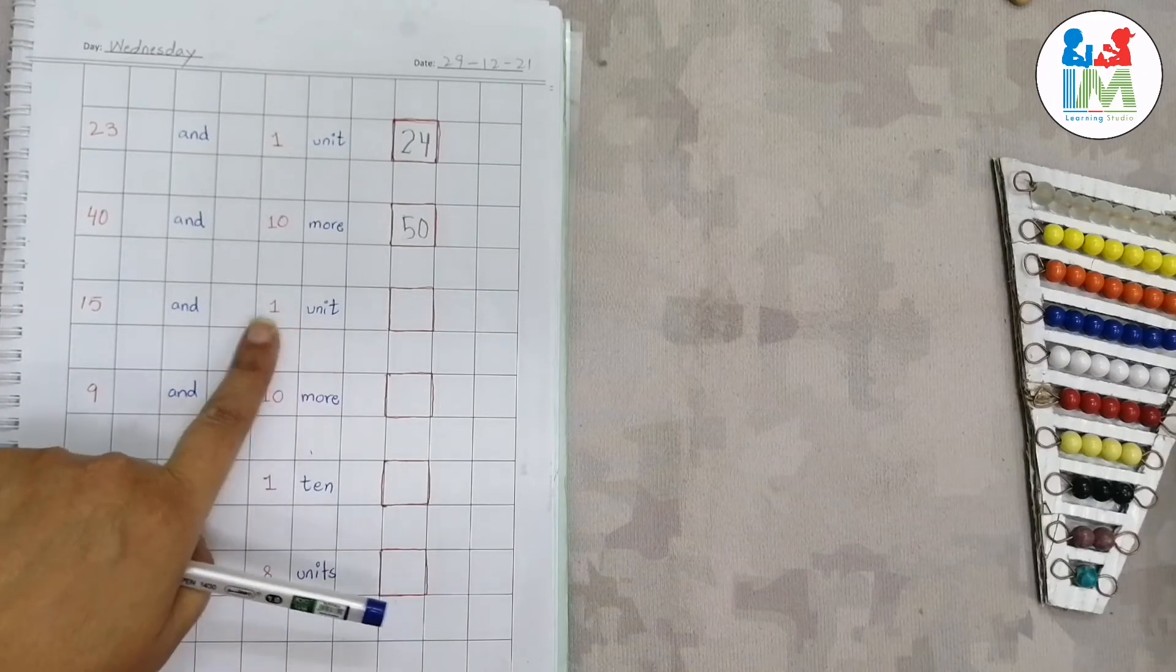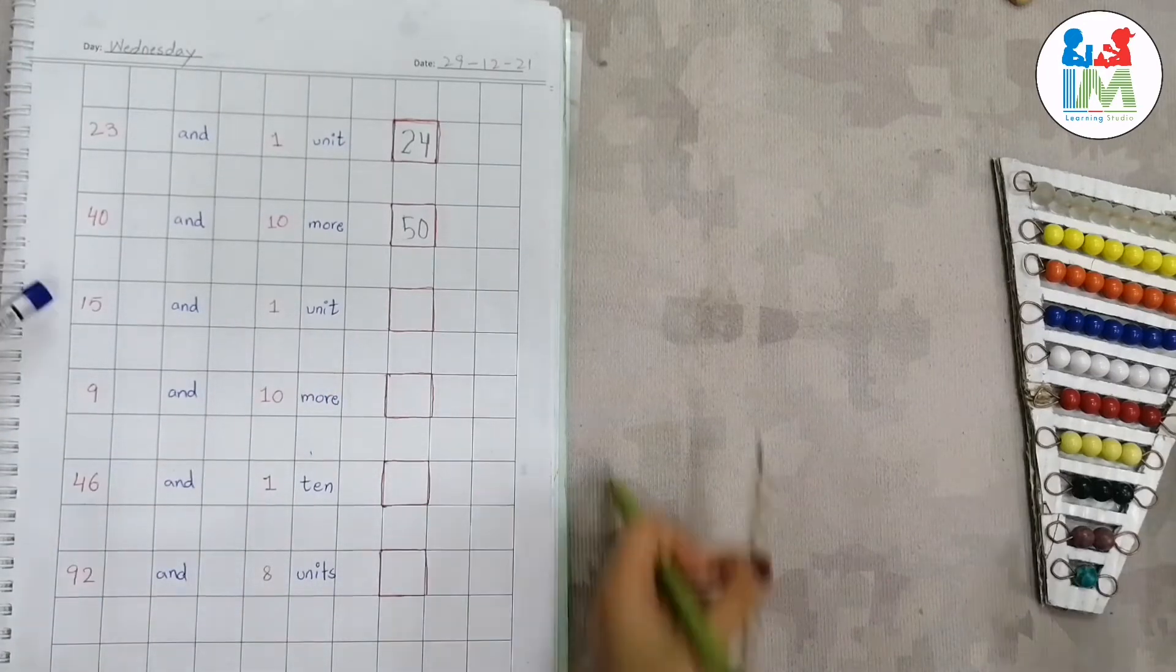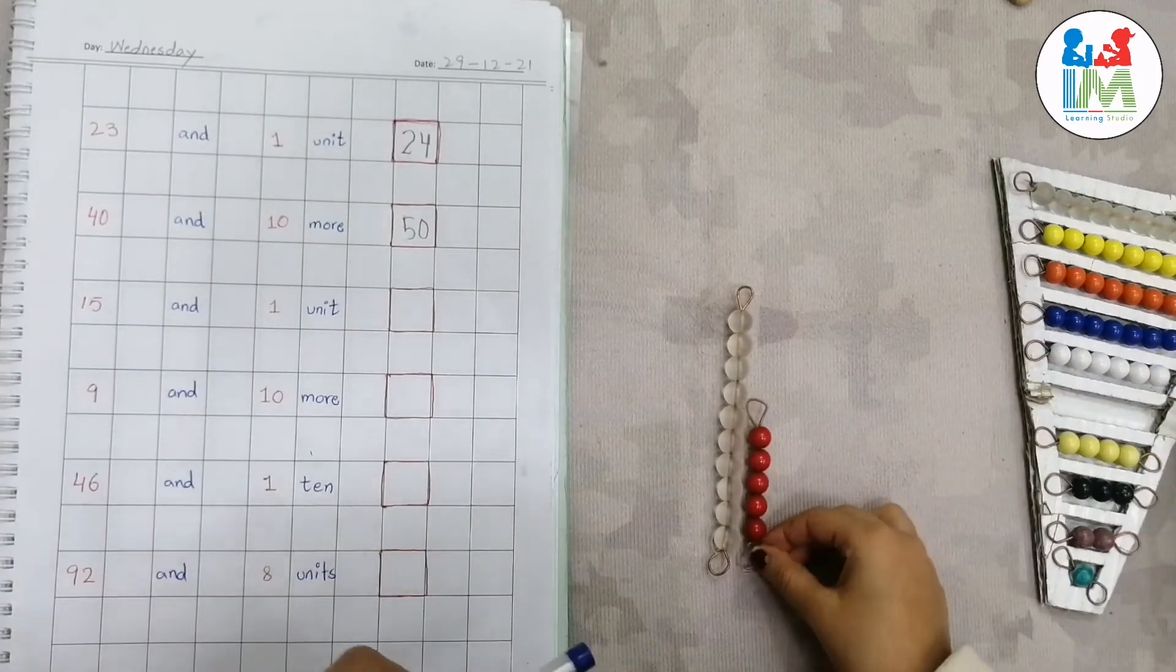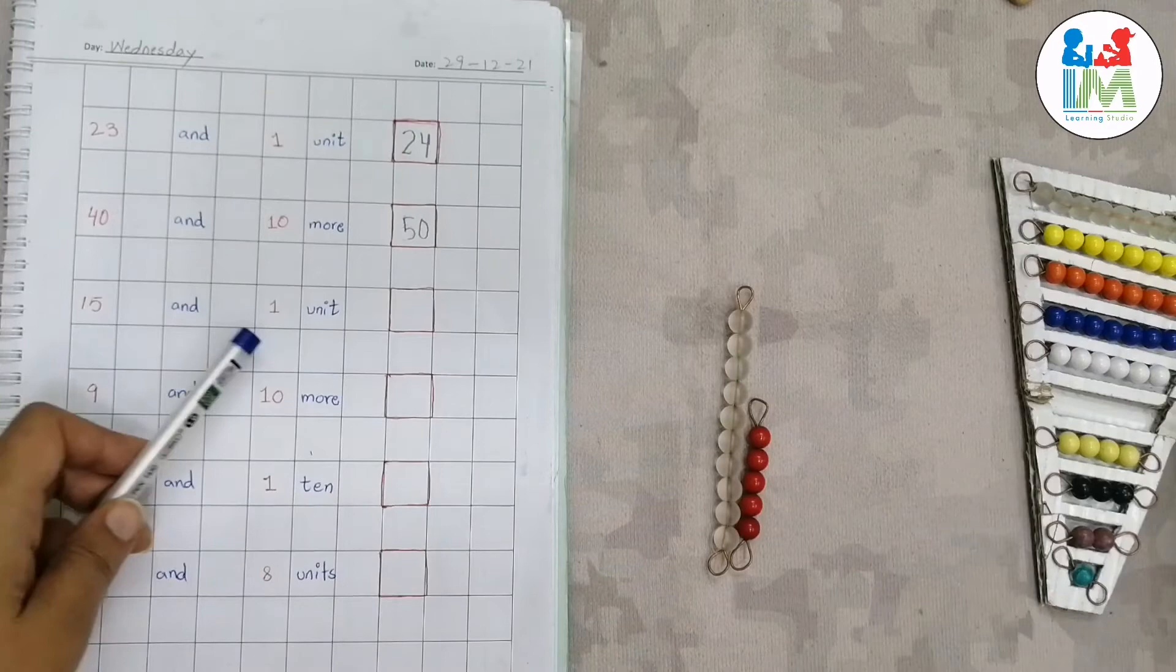Okay, now next, what number here? What number is this? 15. 15. And what you have to add in 15? One unit. One unit. First make 15. Yes, one ten and five units. What number now? 15. Add one unit.